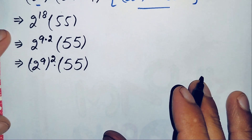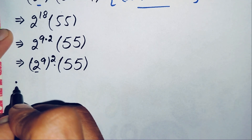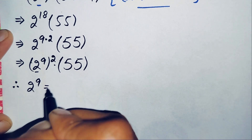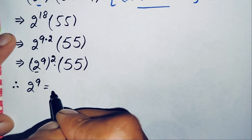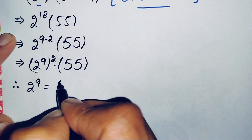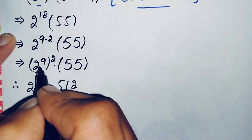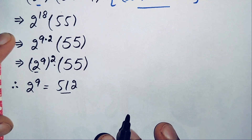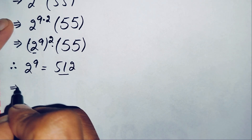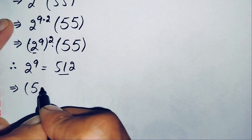Now we find the value of 2 raised to power 9. That means multiplying 2 nine times: 2×2×2×2×2×2×2×2×2 gives us 512. So we replace 2 raised to power 9 with 512.